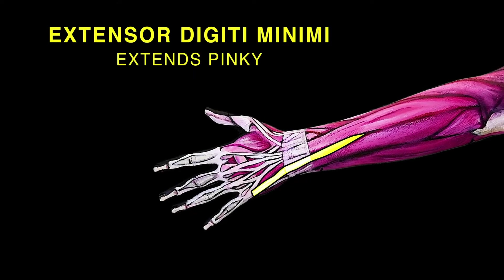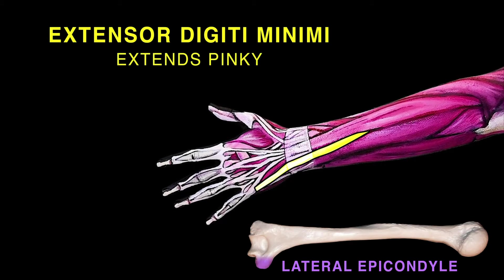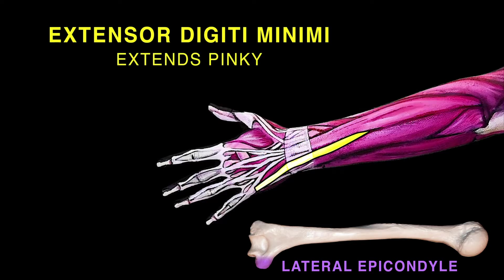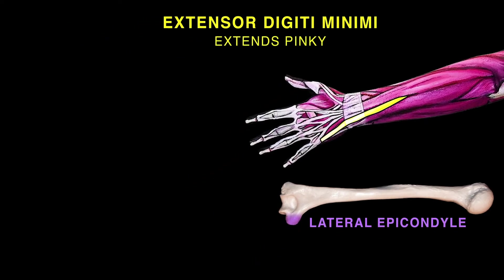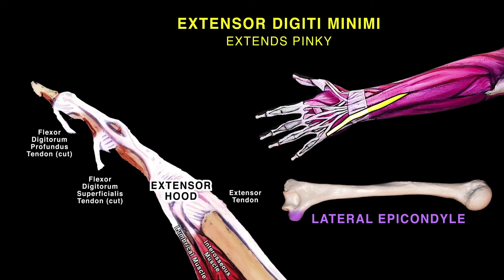The extensor digiti minimi originates from the lateral epicondyle of the humerus. Sometimes it can be fused with the extensor digitorum muscle. The extensor digiti minimi attaches, together with the extensor digitorum tendon, into the extensor hood of the little finger, and extends the pinky and helps extend the wrist.